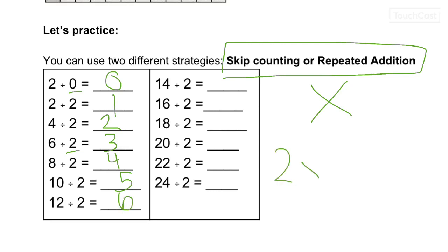Two times what gives me fourteen? Seven. Two times what gives me sixteen? Eight. Two times what gives me nineteen? Nine. I think you see the pattern. Two times what gives me twenty? Ten. Two times what gives me twenty-two? Eleven. Two times what gives me twenty-four? Twelve. So it's a lot easier to use multiplication and just flip it to solve it.